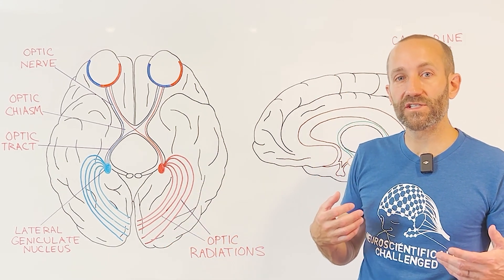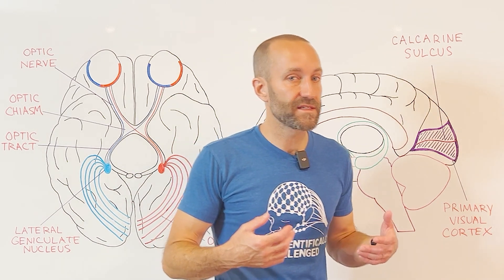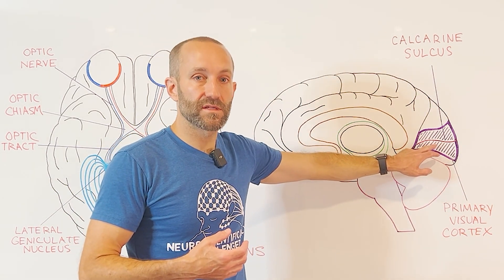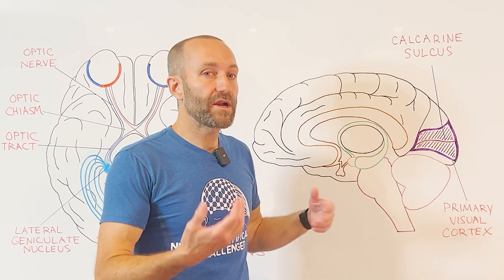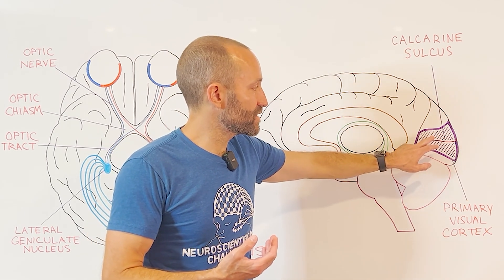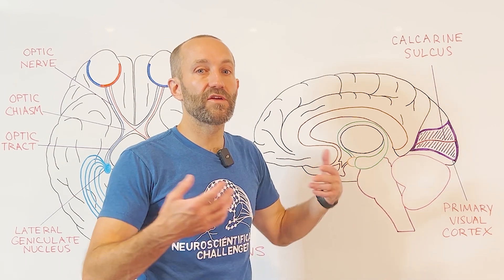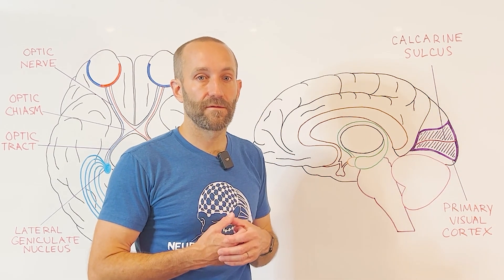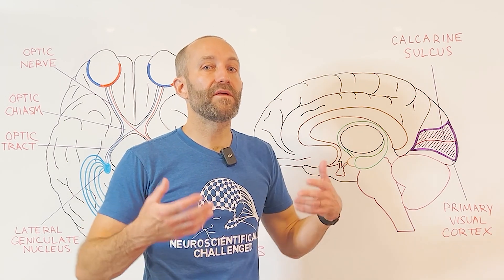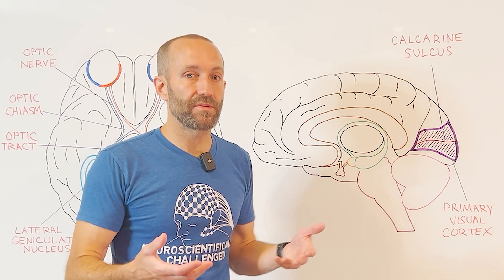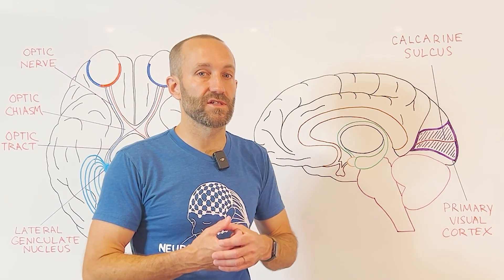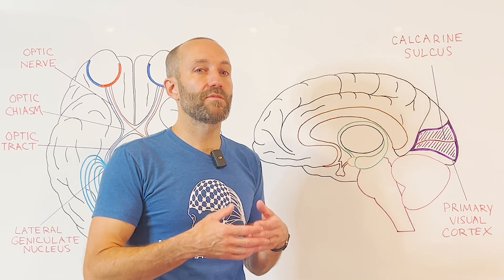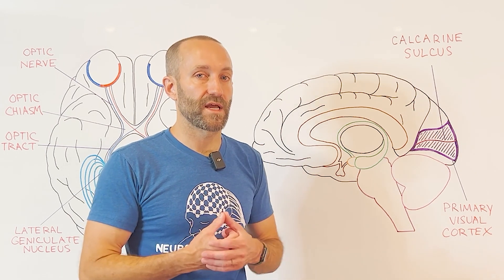The optic radiations travel back to a region of cortex surrounding a fissure called the calcarine sulcus. This small area of cortex is called the primary visual cortex, or V1, represented by the striped area here. There's a collection of myelinated fibers forming a white stripe visible to the naked eye in anatomical brain sections, and because of this striation, the primary visual cortex is sometimes called the striate cortex.